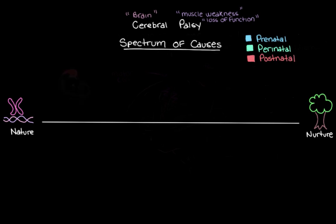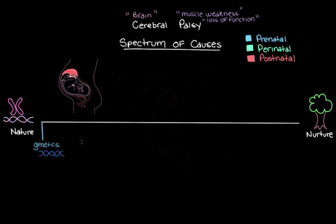Starting with events that can occur before birth — in utero — all the way over on the nature end of our spectrum, we can put genetics. There are a few genetic causes of cerebral palsy where mom or dad inadvertently passes on a mutated gene that results in damage to one of the movement centers in the brain. But these are pretty rare causes, and the rest of the prenatal events fall somewhere between nature and nurture, relating more to the environment the fetus is in.